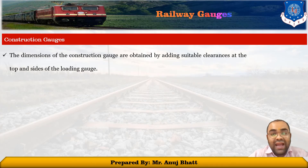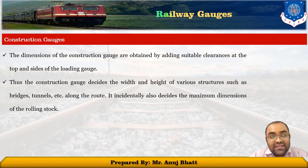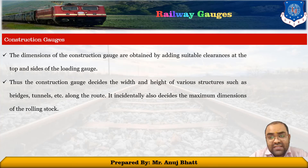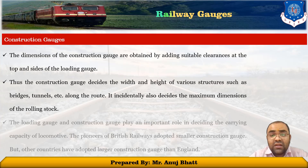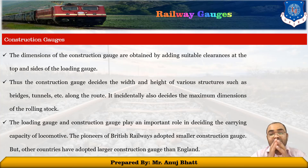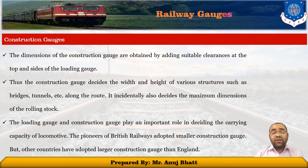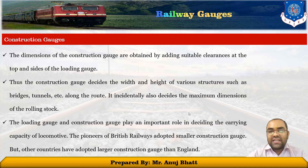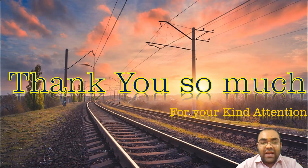The construction gauge dimensions are obtained by adding suitable clearances at the top and sides of the loading gauge. The construction gauge decides the height of various structures such as bridges and tunnels, and also decides the maximum dimension of rolling stock. Loading gauge and construction gauge play an important role in deciding the carrying capacity of a locomotive. The pioneers of British railways adopted smaller construction gauges, but other countries have adopted larger construction gauges. This concludes the topic of railway gauges.